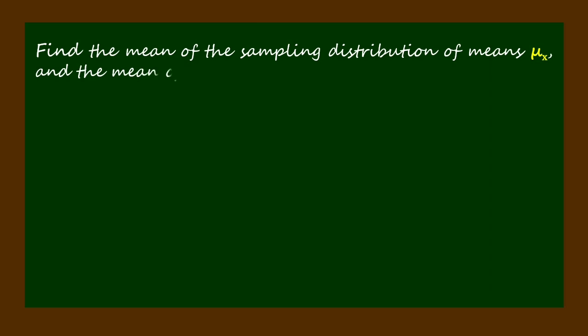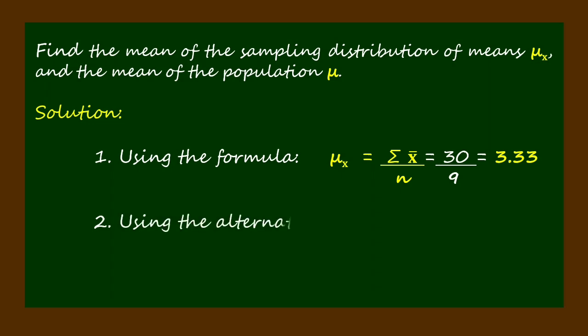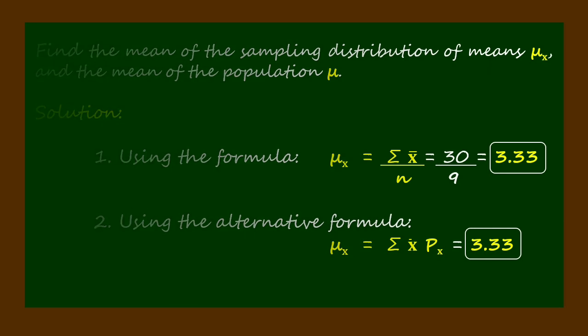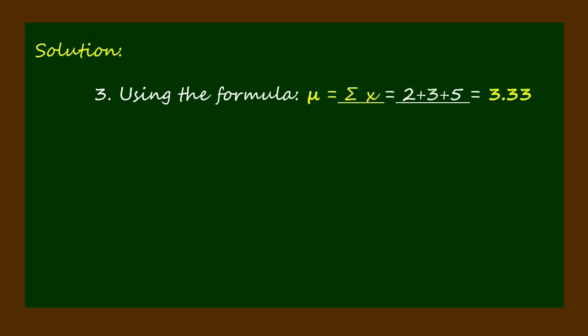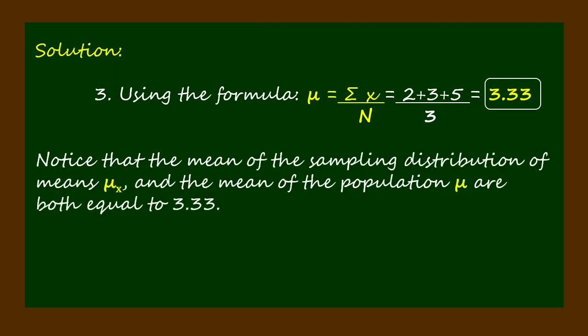Now let's find the mean of the sampling distribution of means mu sub x and the mean of the population mu. Using the given formula and the alternative formula, both yield the value 3.33 as the mean of the sampling distribution of means mu sub x. Using the given formula for finding the mean of the population mu, we also get 3.33. Notice that mu sub x and the mean of the population mu are both equal to 3.33. Thus mu sub x equals mu equals 3.33.